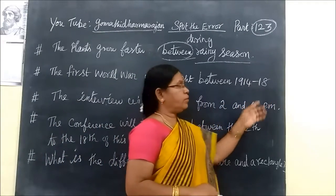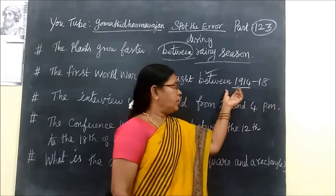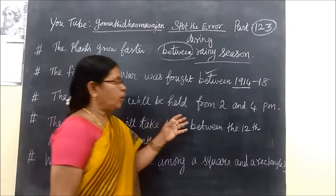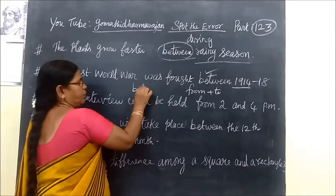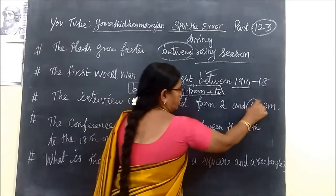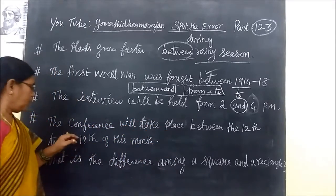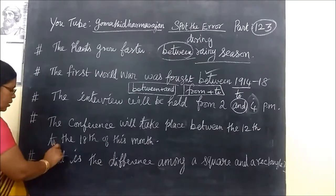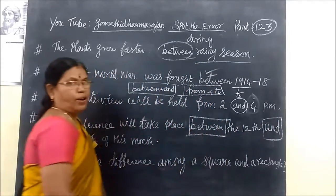For a year range like 1914 to 1918, 'between' is correct because there are two separate points. The interview will be held from 2 PM to 4 PM - here 'from...to' is the correct structure. The conference will take place between the 12th and the 18th of this month - again 'between' with two specific dates.